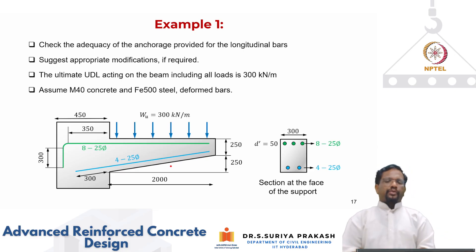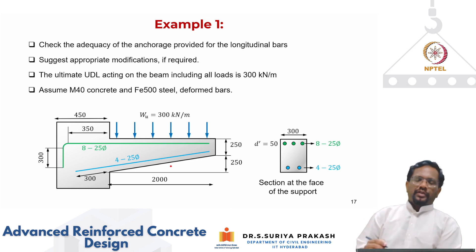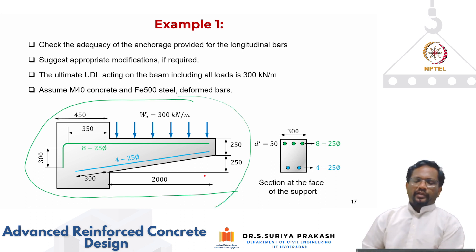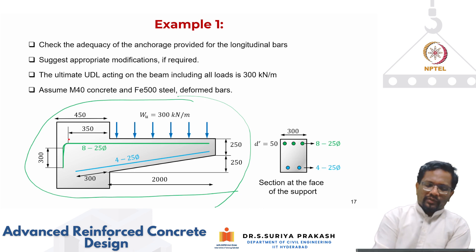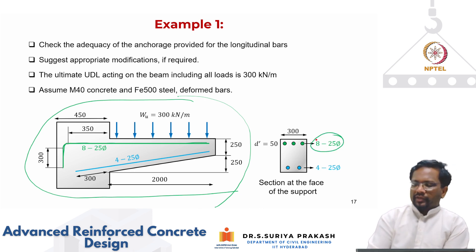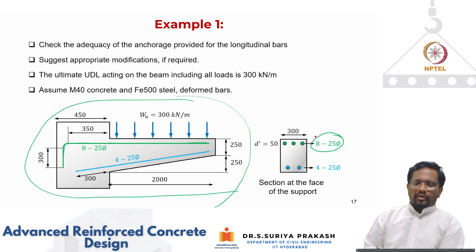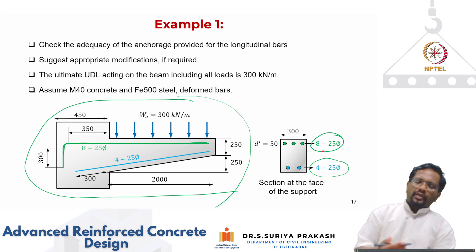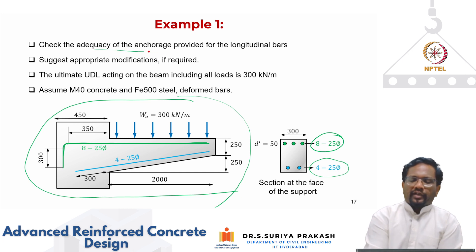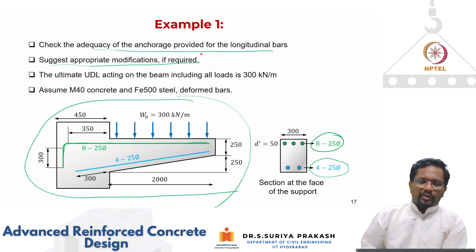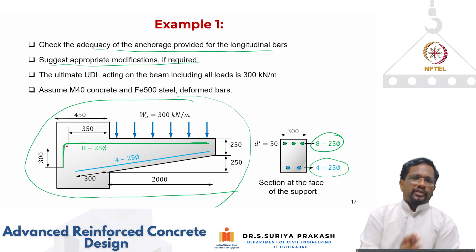In this example, a cantilever beam is subjected to 300 kilonewton per meter. It has eight numbers of 25 mm diameter bars shown in two layers. Eight bars of 25 mm are on the tension side and four bars of 25 mm are on the compression side, making it a doubly reinforced section. We need to check the adequacy of anchorage for longitudinal bars for both tension and compression, and suggest modifications. The column dimension given is 450 mm.